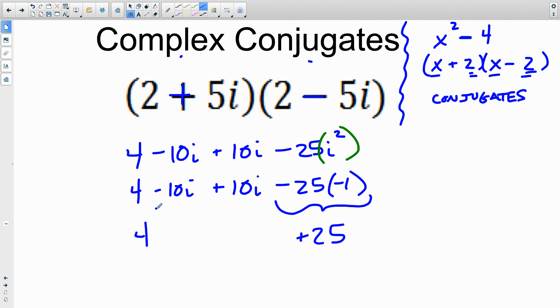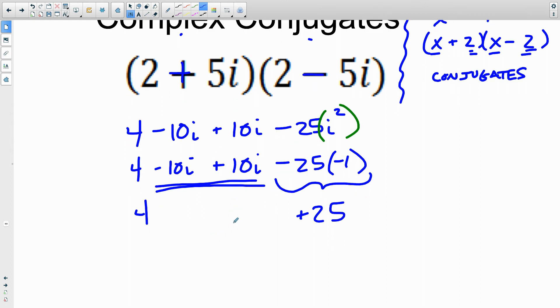Now what happens with our imaginary parts in here? What are they? Those are opposites. So our entire product, and I realize you probably want to jump the gun here and add these, we're not going to do it just yet. This product becomes 4 plus 25 because these imaginary terms are canceled out.